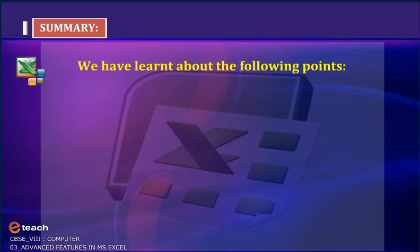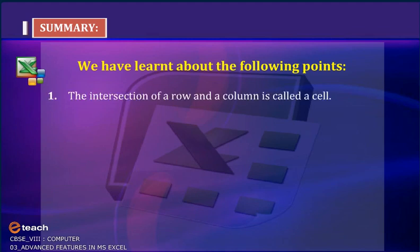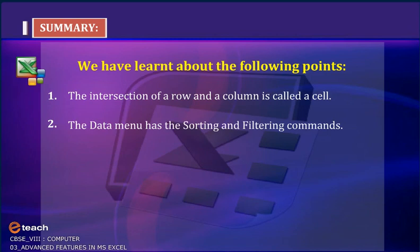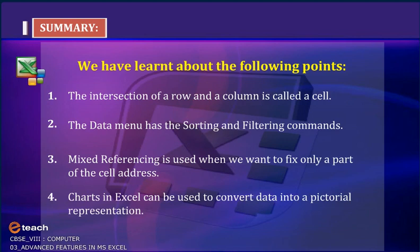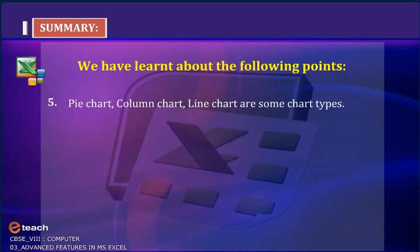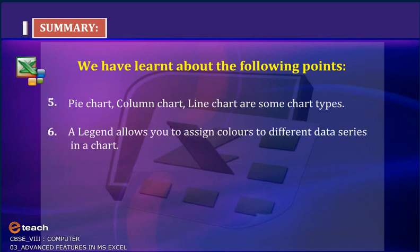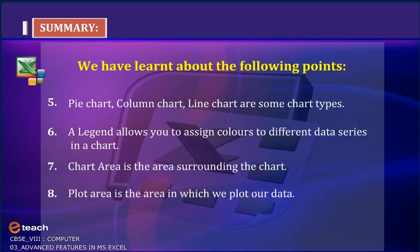Summary. In this chapter, we have learnt the following points: The intersection of a row and a column is called a cell. The Data menu has the sorting and filtering commands. Mixed referencing is used when we want to fix only a part of the cell address. Charts in Excel can be used to convert data into a pictorial representation. Pie chart, column chart, and line chart are some chart types. A legend allows you to assign colors to different data series in a chart. Chart area is the area surrounding the chart. Plot area is the area in which we plot our data.